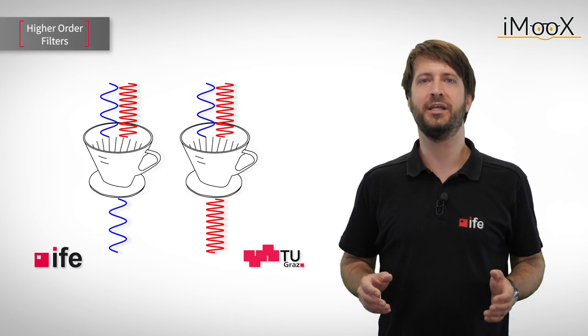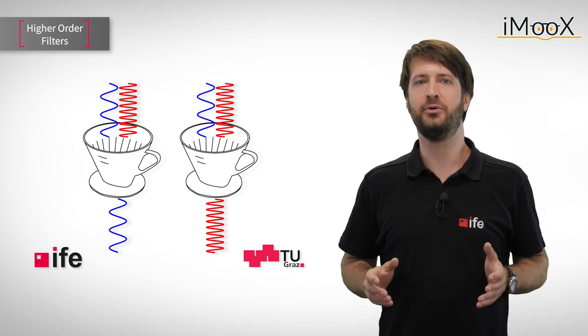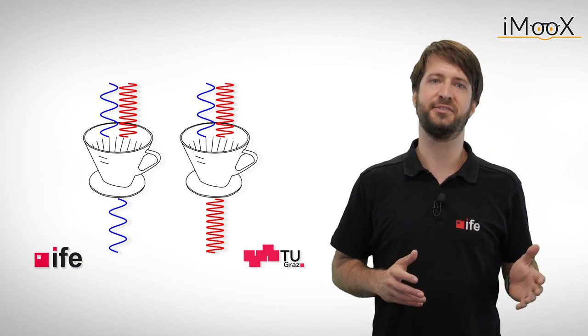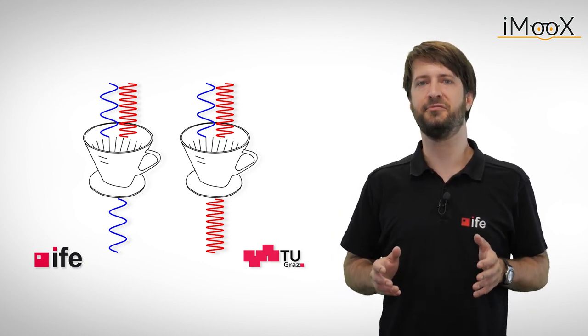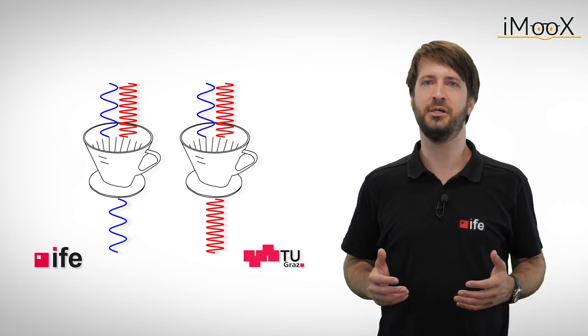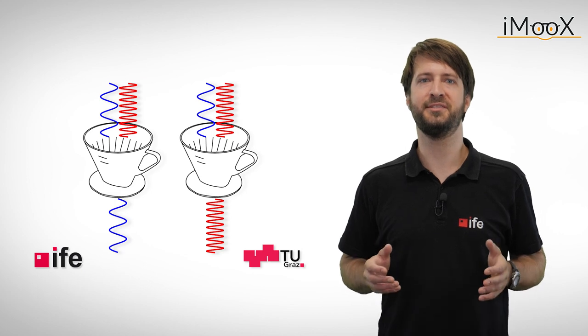In this video we again want to focus on passive filters only. We already know the simplest type of those circuits, consisting of a single capacitor and a resistor. The capacitor is often used for passive filter circuits because it is easy to manufacture, costs little money and behaves quite predictable.